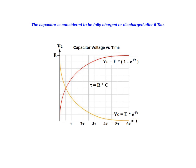The capacitor is considered to be fully charged or fully discharged after a time period equal to 6 times the value of tau in seconds. An example problem will help us to understand how these relationships can be applied.